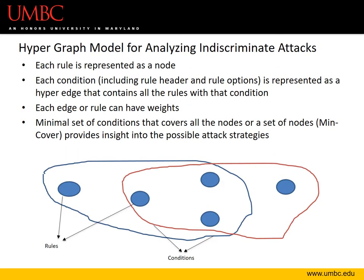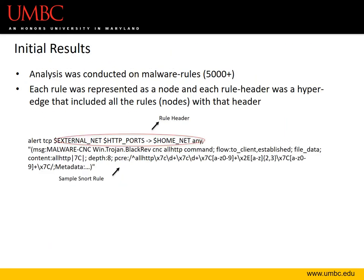A HypoGraph model can be used for analyzing indiscriminate attacks, where each rule is represented as a node and each condition is represented as a hyperedge. To demonstrate this, we analyzed SNORT's malware rules, where each rule represents a node and each rule header represents a hyperedge that includes all the rules with that header.